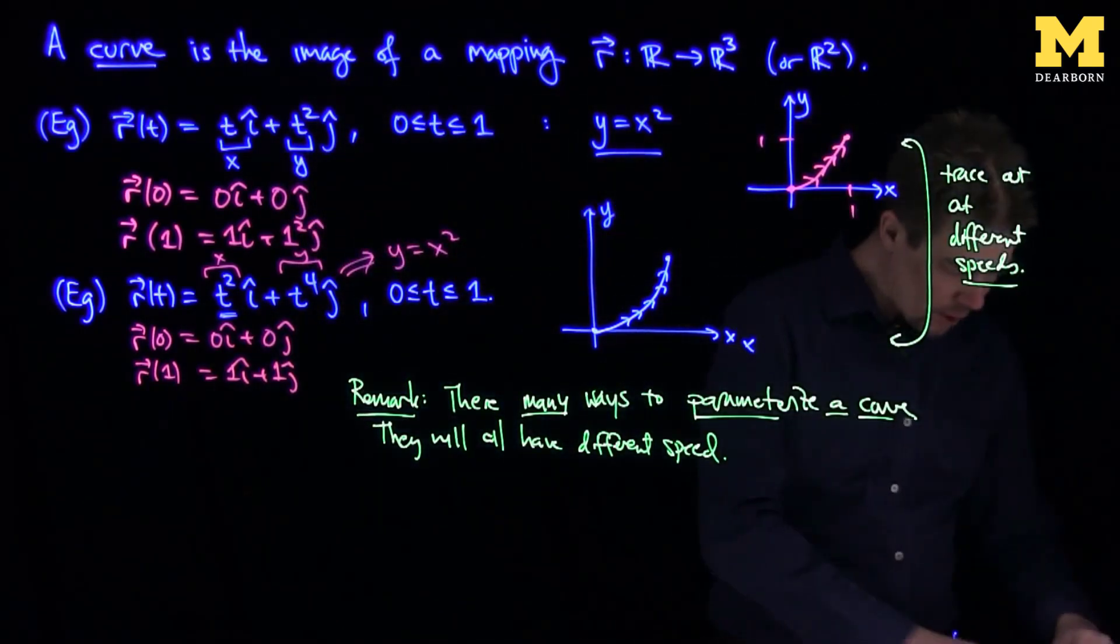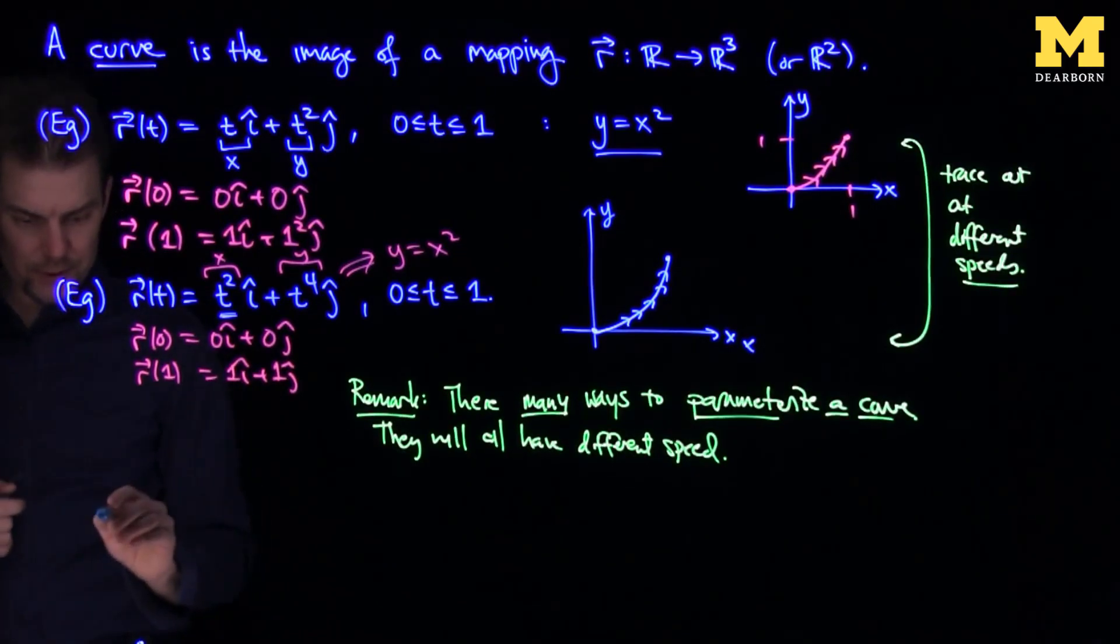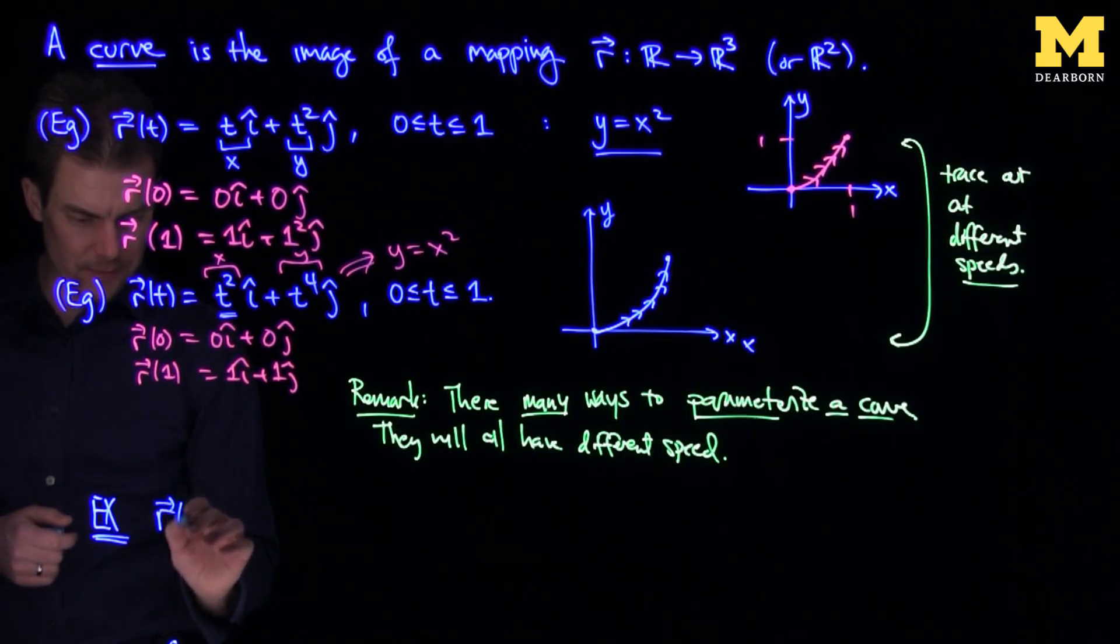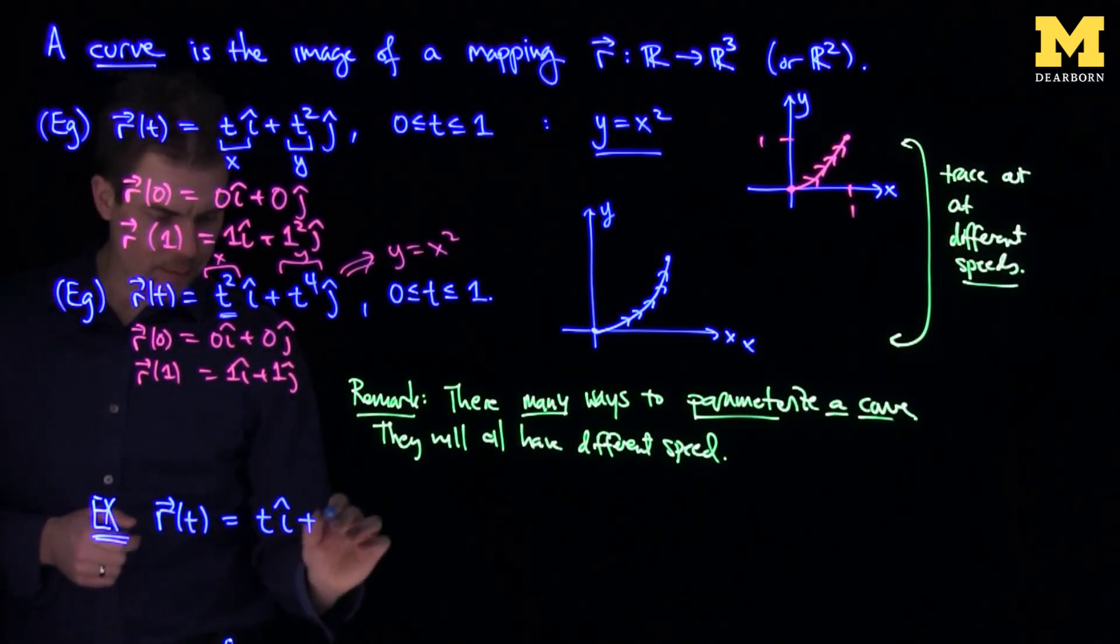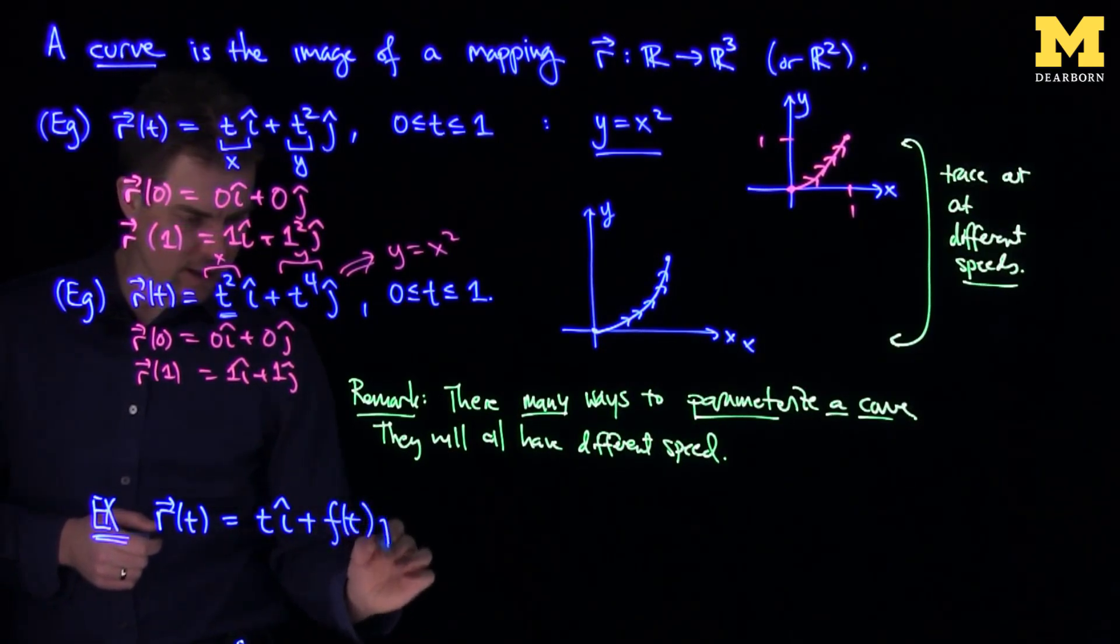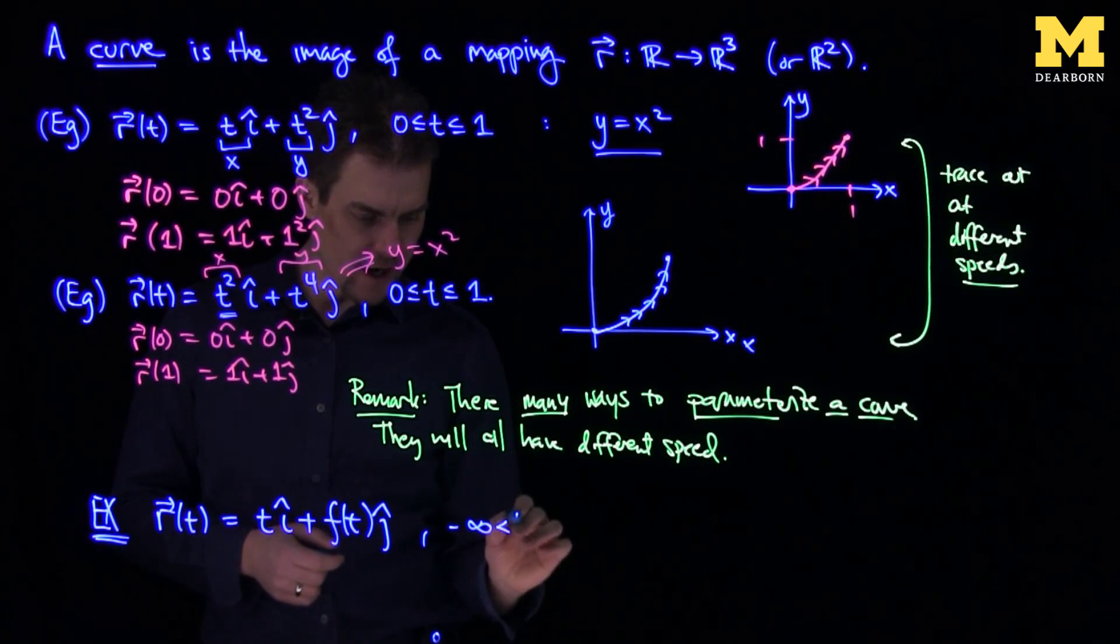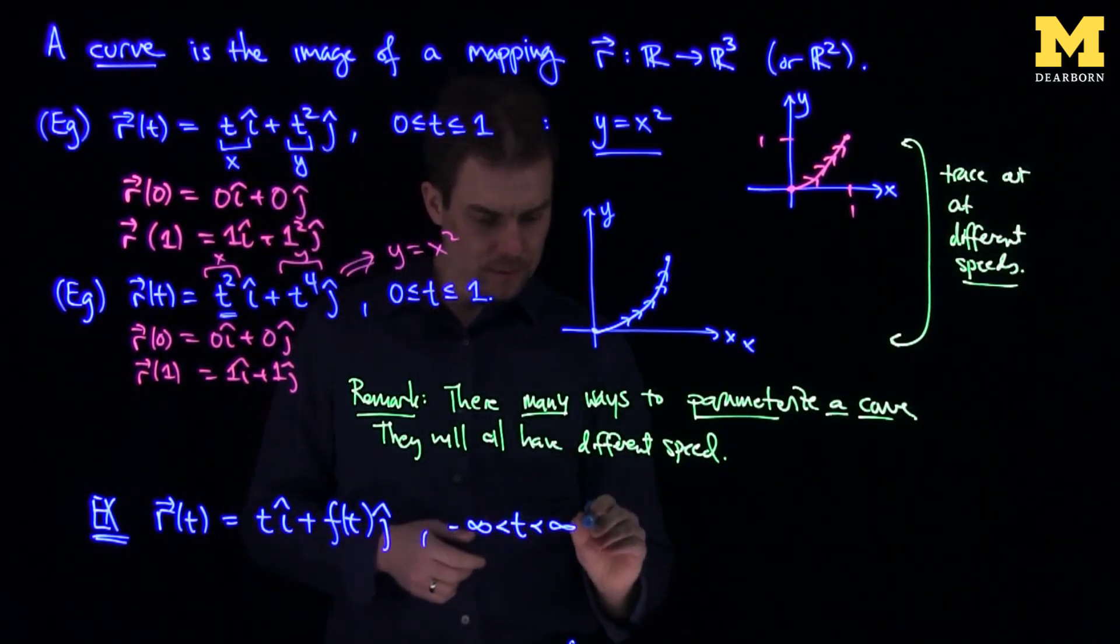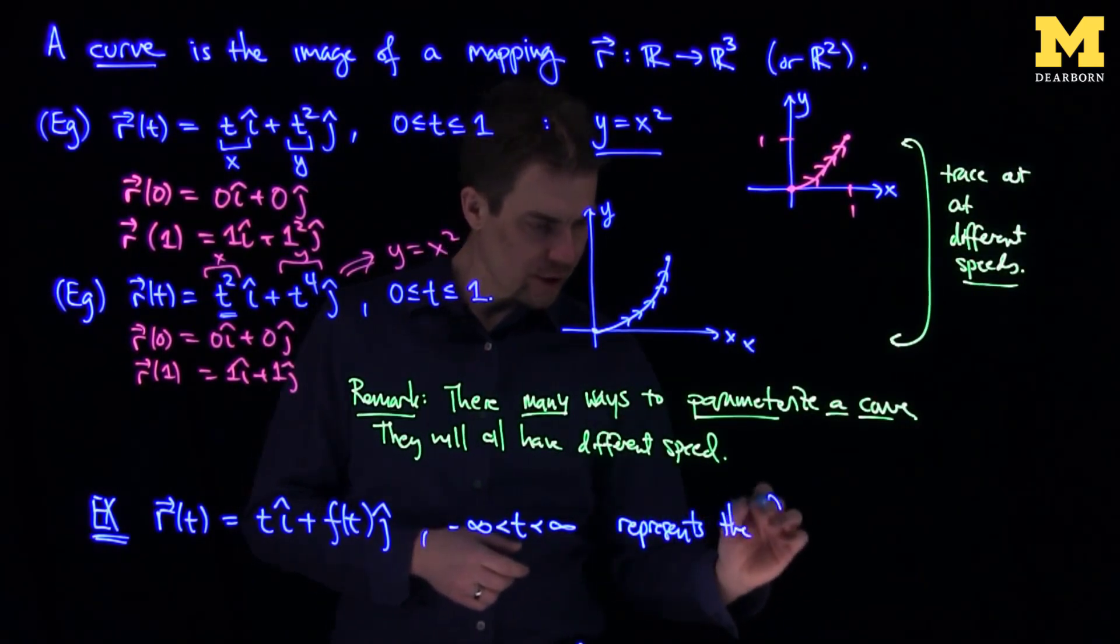For example, most functions we see in calculus can be parameterized by a curve. If I look at the curve r of t, I input a t, I'll look at t i-hat plus f of t j-hat for any value of t, t between negative infinity and infinity. This curve represents the function.